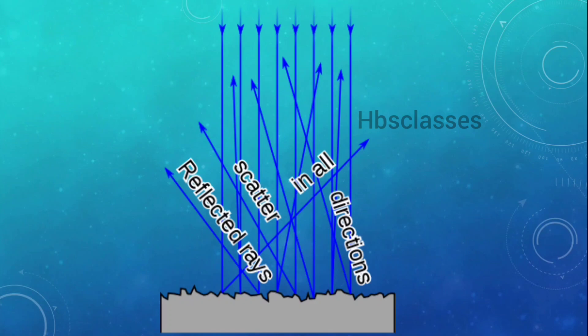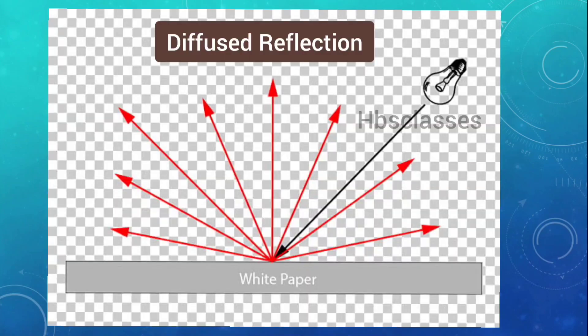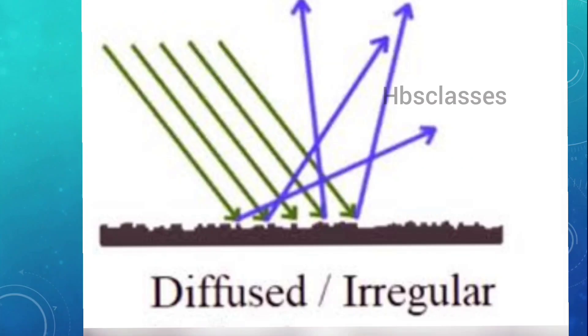Thus, a sheet of paper produces diffuse reflection of light and no image is formed. In diffused reflection, light rays falling on the rough surface of paper are scattered in all directions and hence no image is formed.